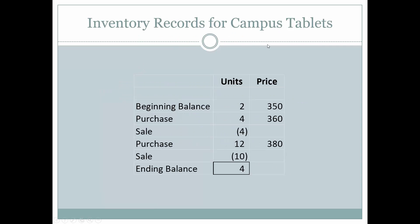We are going to use the same inventory records for each of the four different methods. We have a beginning balance of two items originally purchased for $350. Then we purchase four items for $360 from an outside vendor. Then we sell four items, purchase 12 more at $380 each, sell 10 items, and end with a balance of four items.